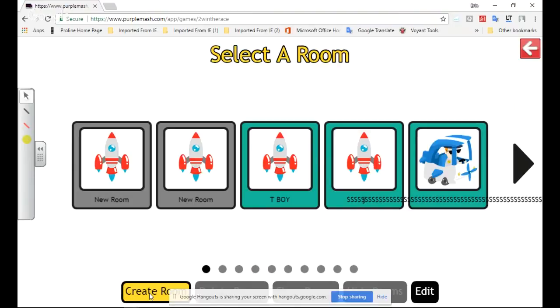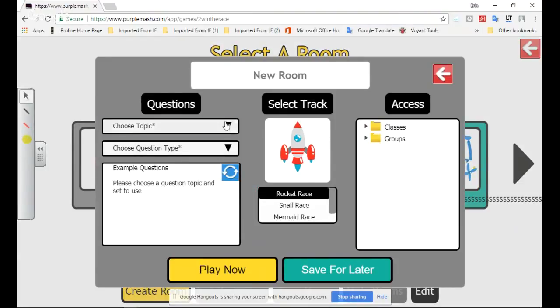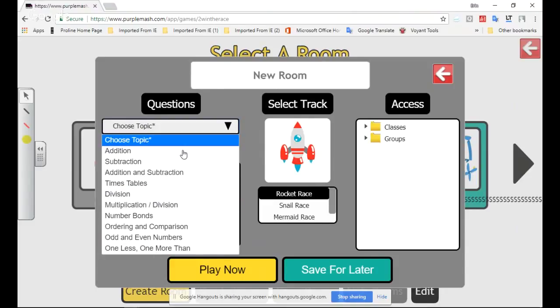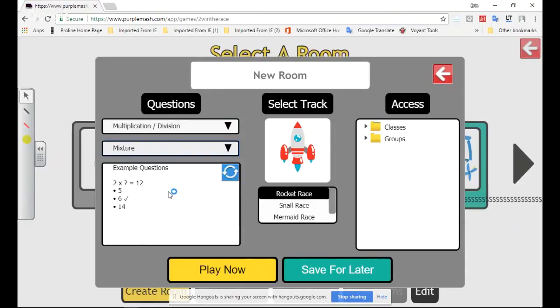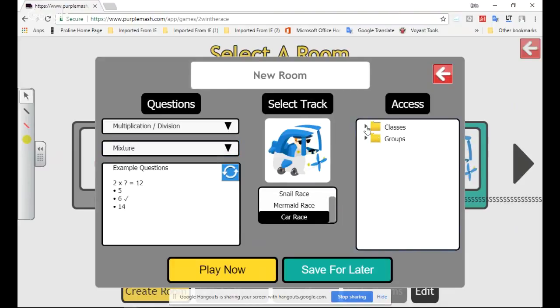To create a room here, we can choose our question type. We have a whole bunch of different options, so today we're going to do multiplication and division. You can choose difficulty, and they've also got a whole bunch of different races. We're going to do a car race.